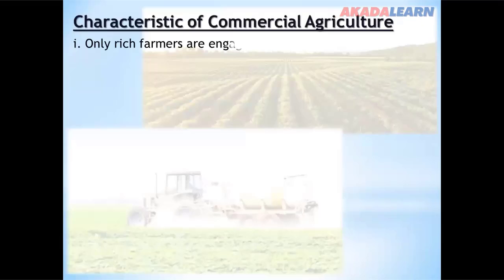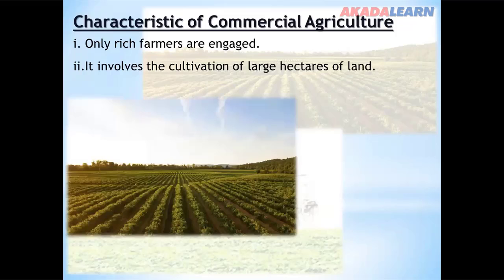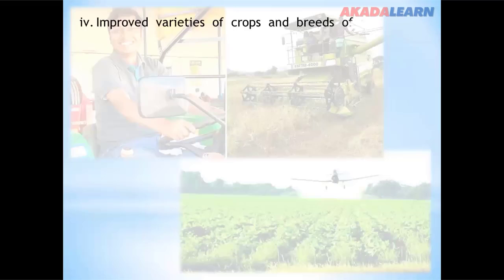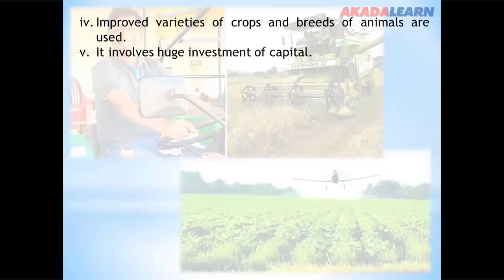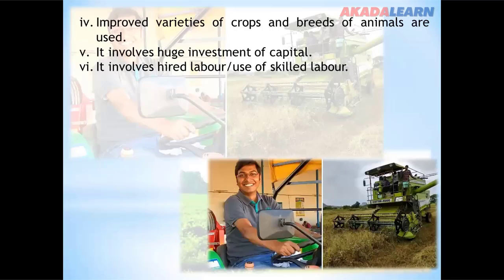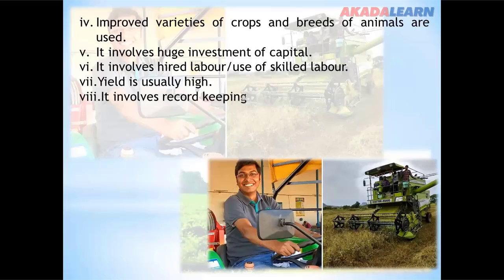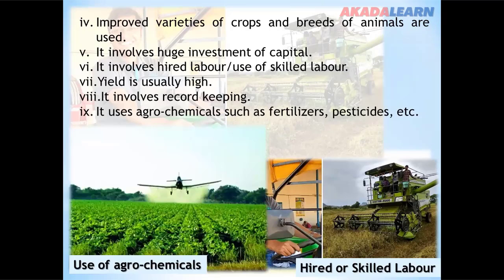Only rich farmers are engaged in commercial agriculture. It involves the cultivation of large hectares of land, and most operations are mechanized. Improved varieties of crops and breeds of animals are used. It involves huge investment of capital and hired labor. Yield is usually high. It involves record-keeping, unlike subsistence agriculture. It uses agrochemicals such as fertilizers, pesticides, etc.